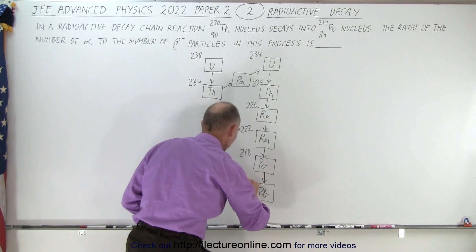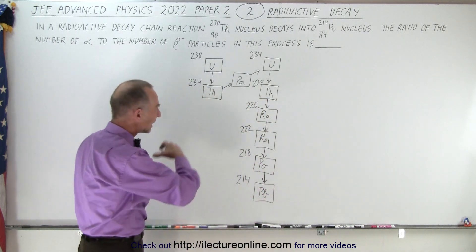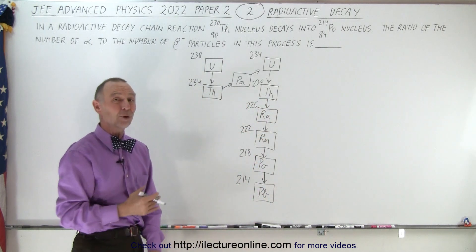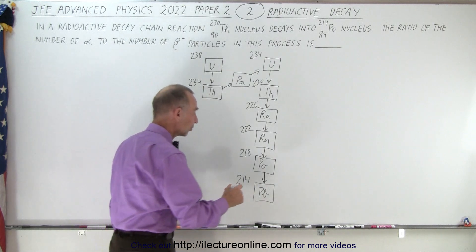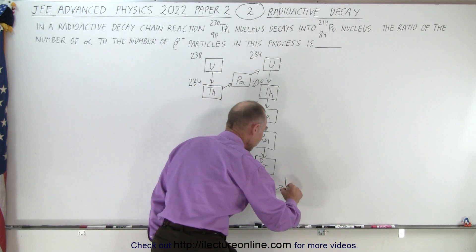This lead will be 214. But you know that's not the end product, because the end product of the decay process needs to be lead-206. So that means there's going to be another decay.